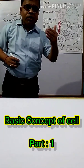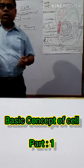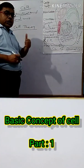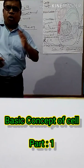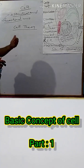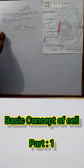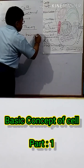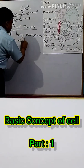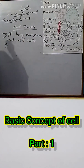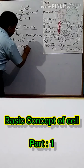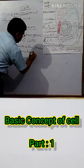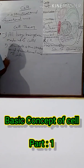Then, what is cell theory? Who proposed cell theory? Actually, three main scientists proposed this theory: Schleiden, Schwann, and Virchow proposed this theory, and it is called cell theory. According to cell theory, point one: all living beings are made up of cells. Point two: the cell is the structural and functional unit of life.